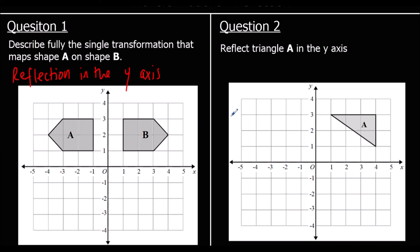Question two: again, we're reflecting in the y-axis, so the mirror line is the y-axis. Each point will be the same distance away — the shortest distance is a straight line. So one away, one away on the other side. This point was four away, so four on the other side. And again, four away, four away. So reflected in the y-axis — this is our shape.